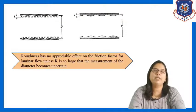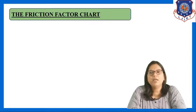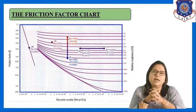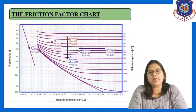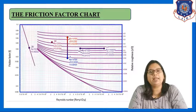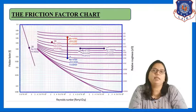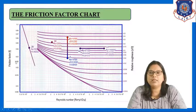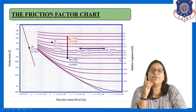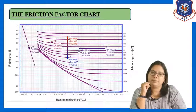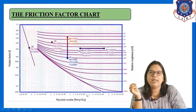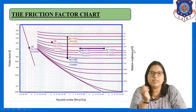Now let us see the friction factor chart. The friction factor chart gives the relation between friction factor f and Reynolds number NRe for a particular relative roughness k/d. In the graph, the x-axis is Reynolds number, the y-axis is friction factor, and separate curves represent different values of relative roughness k/d.